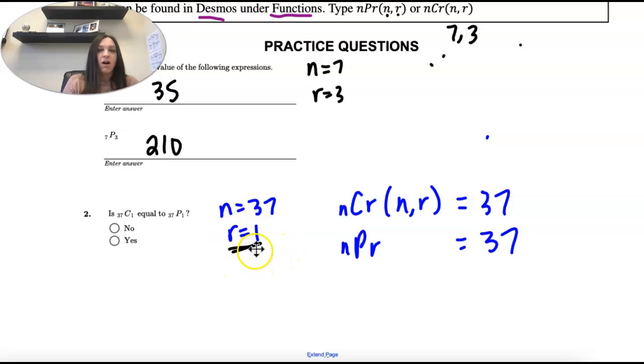So once r is not 1, that's when things start changing. But when you're just picking 1 out of a group, you only have the amount in the group to pick.